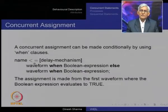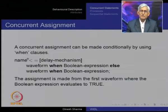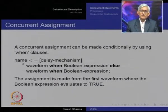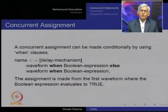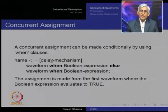This is the only case where delays are treated by default as transport delays, so if you have a narrow pulse here, it will not vanish. A concurrent assignment can be made conditionally by using 'when' clauses. Notice that this is still a concurrent assignment — it is not inside a process statement. The general context is: you have some signal to which you are assigning a whole waveform, and you specify the signal name with a delay mechanism, then the waveform when a Boolean expression is true.